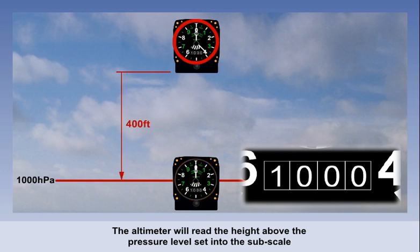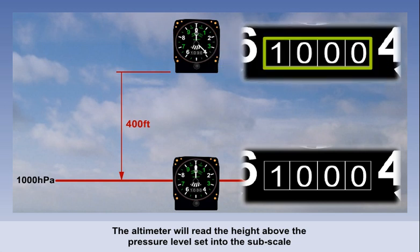As we climbed, pressure would decrease from this value, and the altimeter would show how far away it was from this pressure level. Notice that the value within the subscale is not changing. It's simply reminding us what pressure value has been set as the datum.